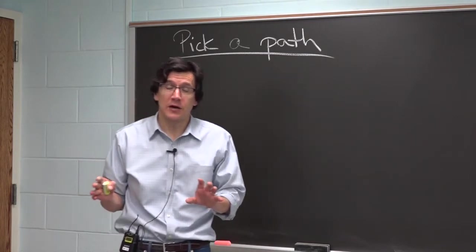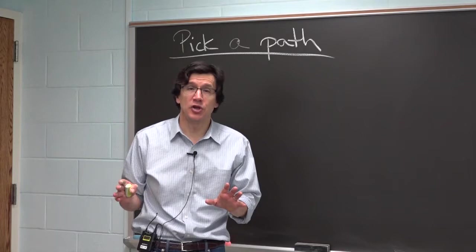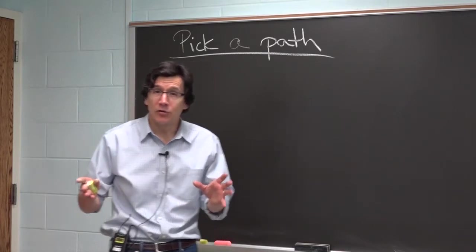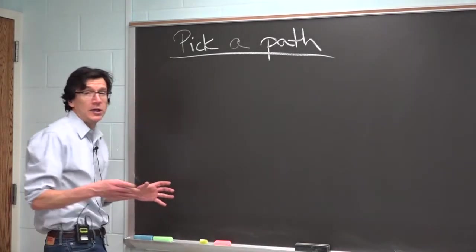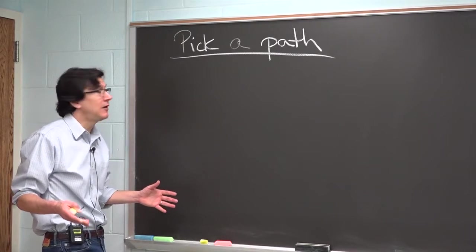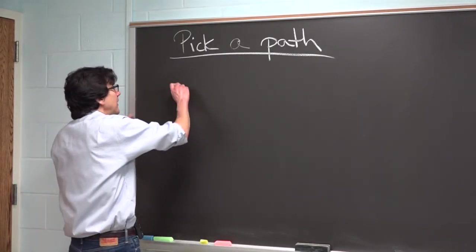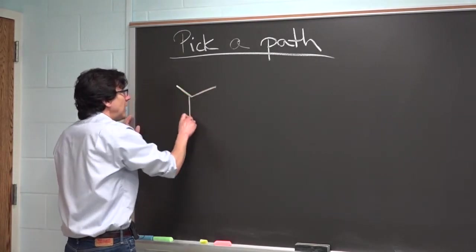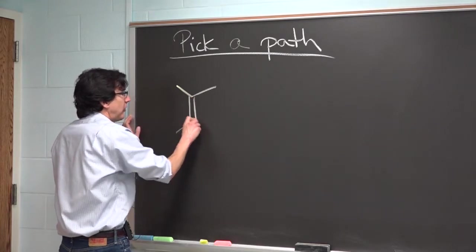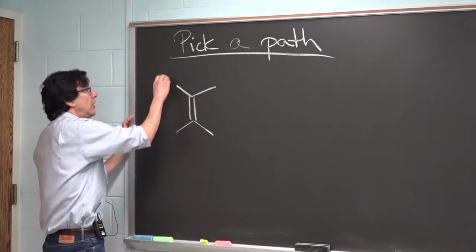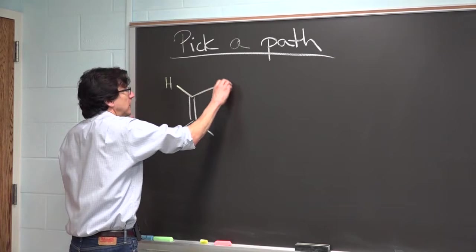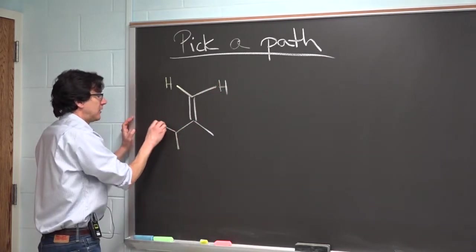This is going to be a similar situation except really in reverse. In an elimination, you make an alkene as your product. In this case, you use an alkene as your starting material. So let me just draw this alkene here.